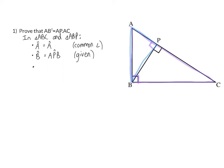And then lastly, we can accept that angle C will be the same size as angle ABP, and our reason interior angles of the triangle. Now we can make the conclusion that triangle ABC is similar to triangle APB, and our reason angle angle angle.